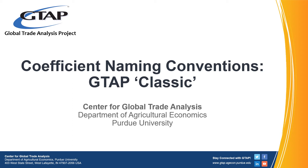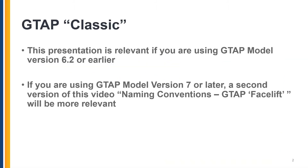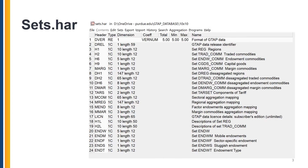In this video, we will go over the coefficient naming conventions that are followed in the GTAB classic database. This video will be relevant if you are using the database consistent with version 6.2 of the GTAB model. If you are using the database consistent with version 7 or later, then a second version of this video is also available that will be more relevant.